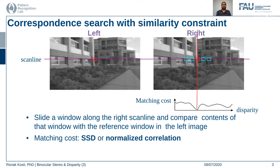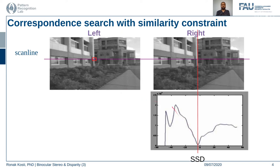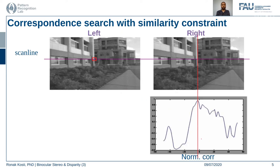The matching cost could be a sum of squared distances or a normalized correlation. If we use sum of squared distances, the value of this cost will be low for a match, whereas with normalized correlation the value will be high. We choose these windows as matches, so the pixel in the middle of the left window matches the pixel in the middle of the corresponding right window.